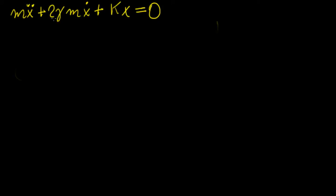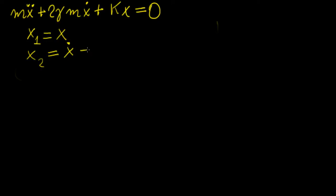What we can do is set up two variables. We're going to set variable x1 equal to x, so that's just going to be equal to the function itself. And we're going to set another variable x2 equal to the derivative of x, which is going to be equal to the derivative of x1.